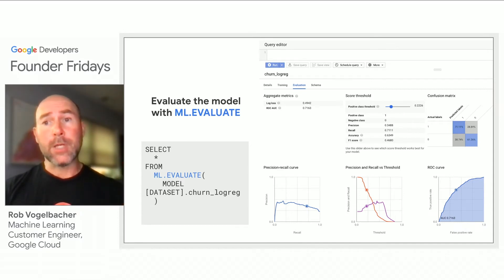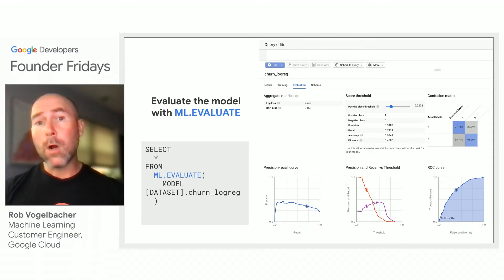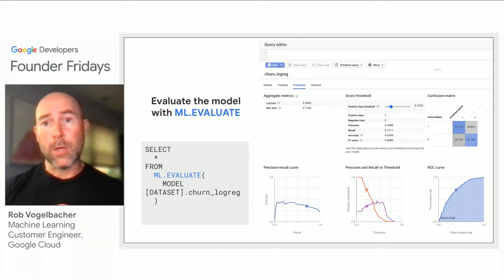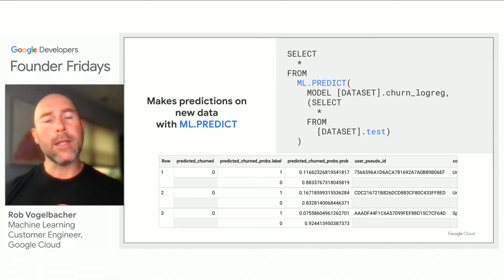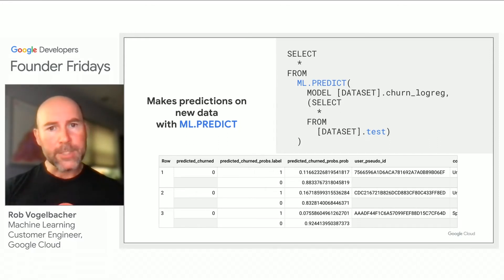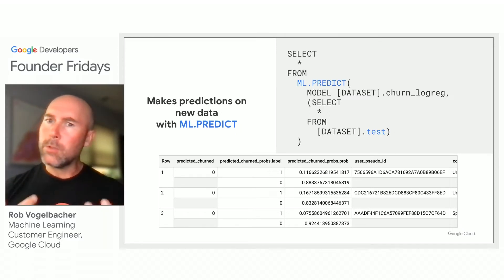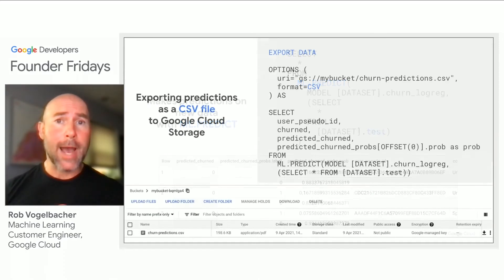For your churn classification model, explore the confusion matrix, the F1 score, and the different error metrics reported back by the evaluation. Be sure you iterate and test. Once you are happy with the performance of the model, generating predictions is as simple as writing a few lines of SQL, referencing your churn model as part of the ML predict function to output those churn probabilities for your customers so that you can take the appropriate action.